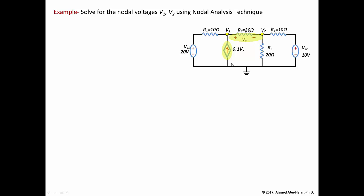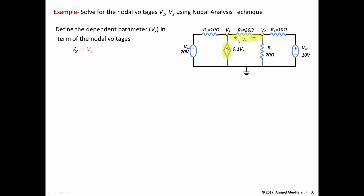That's extremely important. The objective of nodal analysis is to solve for V1 and V2, which are the unknown nodal voltages. So you need to define Vx in terms of those unknown nodal voltages. We need to define the dependent parameter, which is Vx in this case, in terms of the nodal voltages. Vx is basically defined as the voltage from V1 to V2, meaning the voltage at V1 is going to be higher than the voltage at V2. Being consistent with polarities, we can state that Vx equals V1 minus V2.